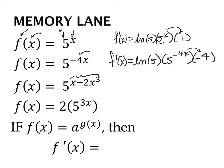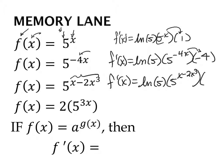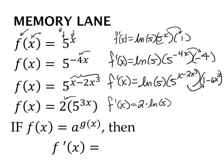We can do the same thing when the exponent is more complex. Natural log of the base, keep the exponential exactly the way it is, then chain rule out the derivative of the exponent. The derivative of x with respect to x is 1, and the derivative of negative 2x cubed is negative 6x squared. If there's a coefficient like 2 out front, it just comes along for the ride, and then we do everything the same: natural log of the base, keep it exactly the way it is, chain rule out the derivative of the exponent with respect to x.